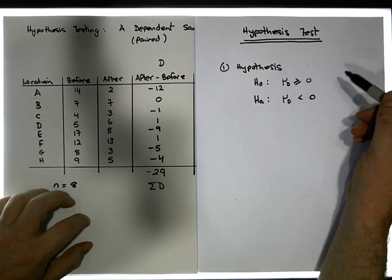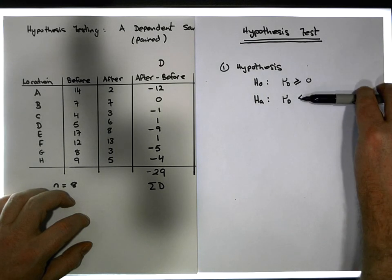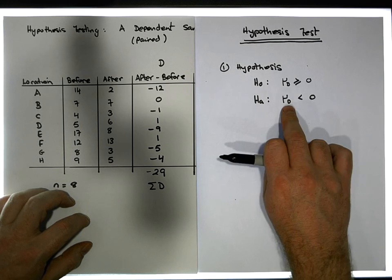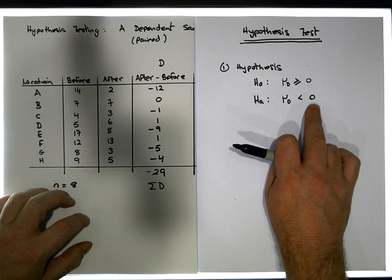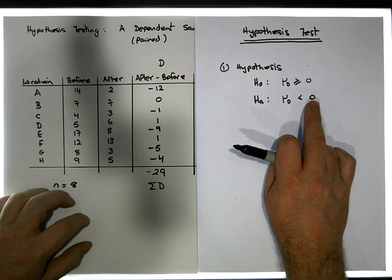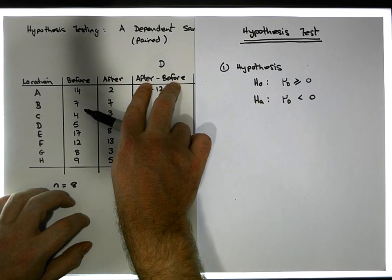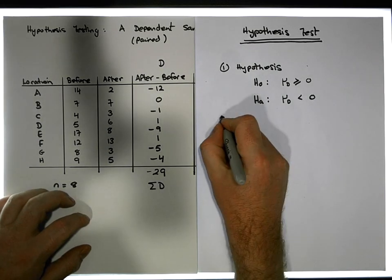In our inferential step, if we reject the null hypothesis, we infer there's evidence to suggest the average difference in the population is less than zero — in other words, the average difference is negative — which indicates there was a reduction.